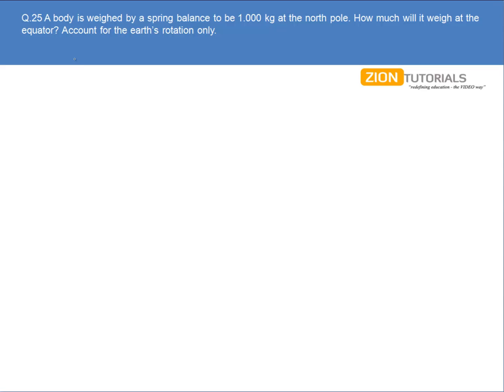The relation between the acceleration due to gravity at the equator and at the pole is given by g' = g - ω²R, where g' is the acceleration due to gravity at the equator and g is at the pole. Omega (ω) is the Earth's rotation and R is the radius of Earth.